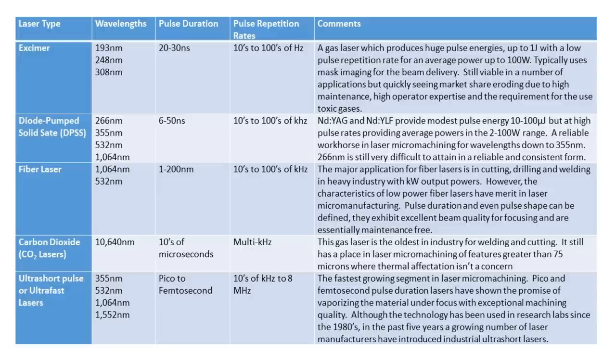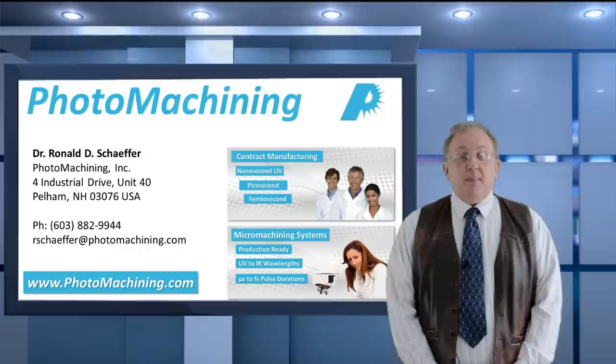Now, the chart shows the laser types commonly used in manufacturing. Wavelengths can be anywhere from 193 nanometers in the UV to 10.6 microns in the infrared. Average power is typically in the range of a few watts to a few hundred watts. And laser pulse durations can range anywhere from microseconds all the way down to a few femtoseconds.